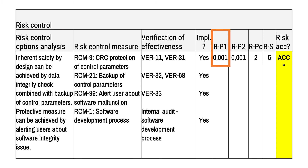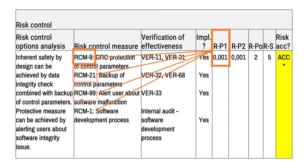If you want to aim for perfection, you could assign a risk reduction number to each risk control measure and then combine them into a single P1. However, it quickly becomes complicated and you might end up in endless discussion about numbers instead of focusing on the big picture, which is designing a safe product. So here I recommend you use common sense — evaluate the combination of available risk control measures and assign a meaningful number to P1.